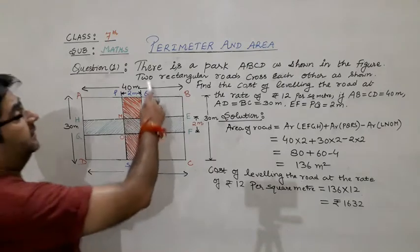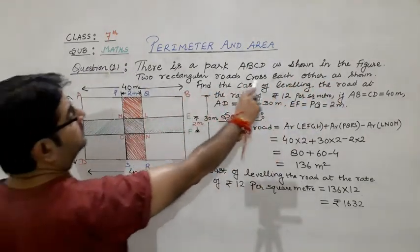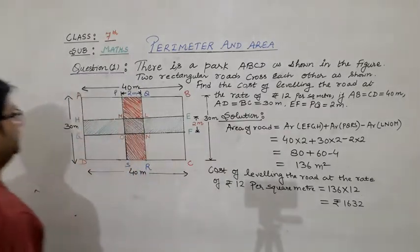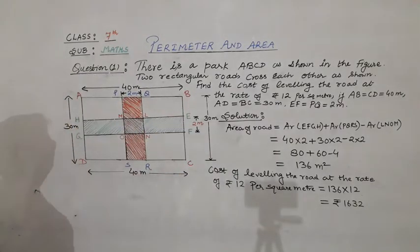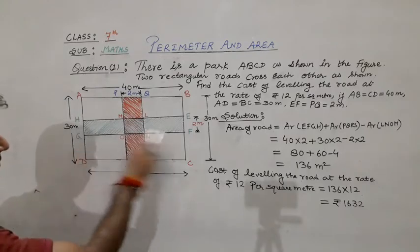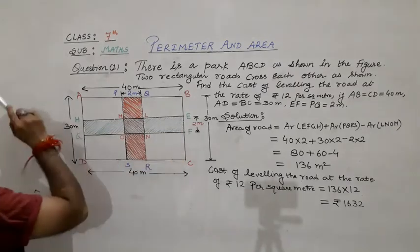The question is: There is a rectangular park ABCD as shown in the figure, and two rectangular roads cross each other as shown. So here is the rectangular path A, B, C, D, and two rectangular roads are also there crossing each other: P, Q, R, S and E, F, G, H.